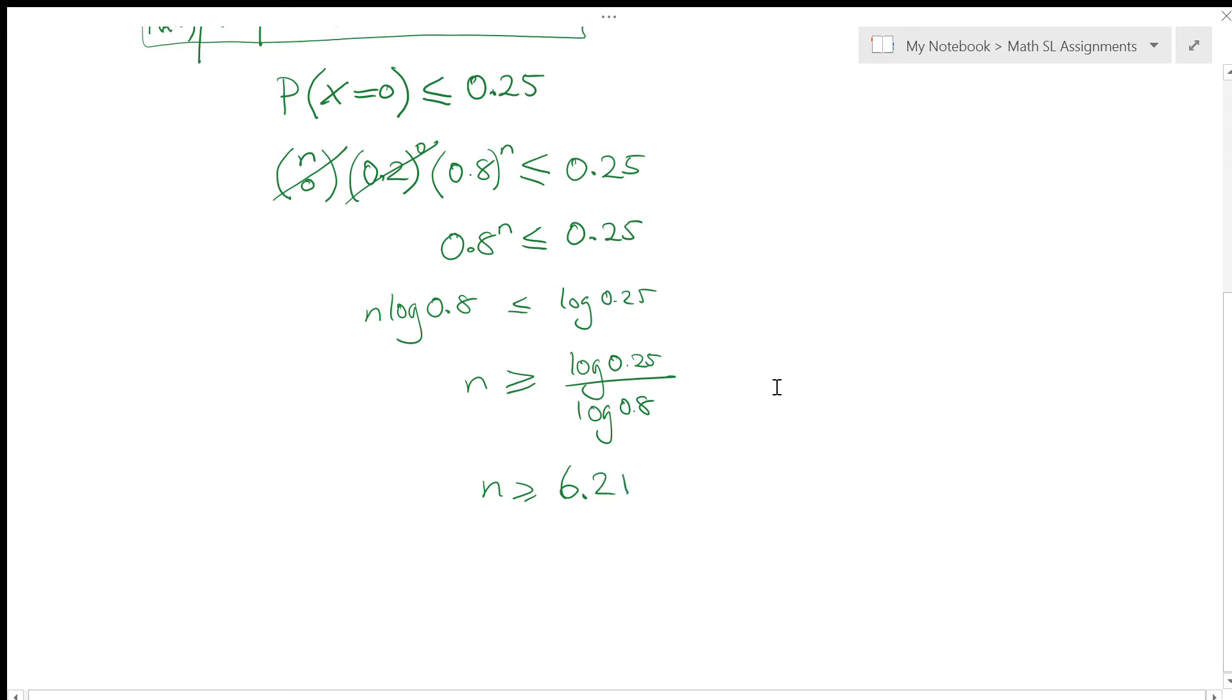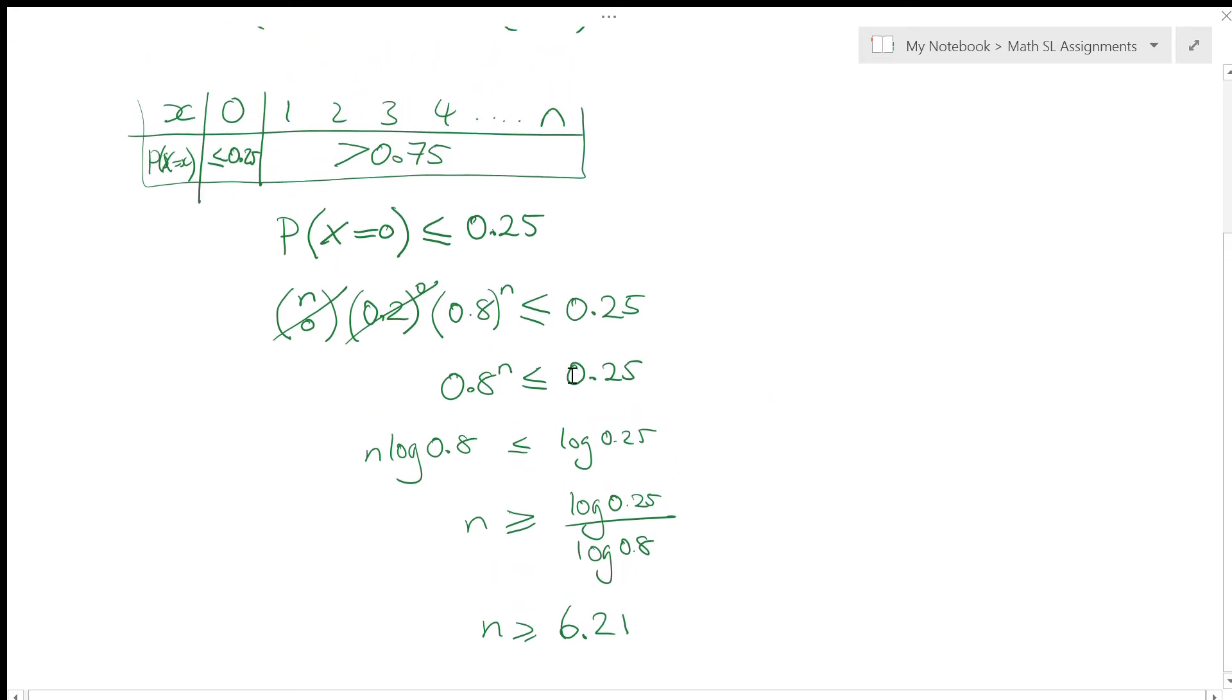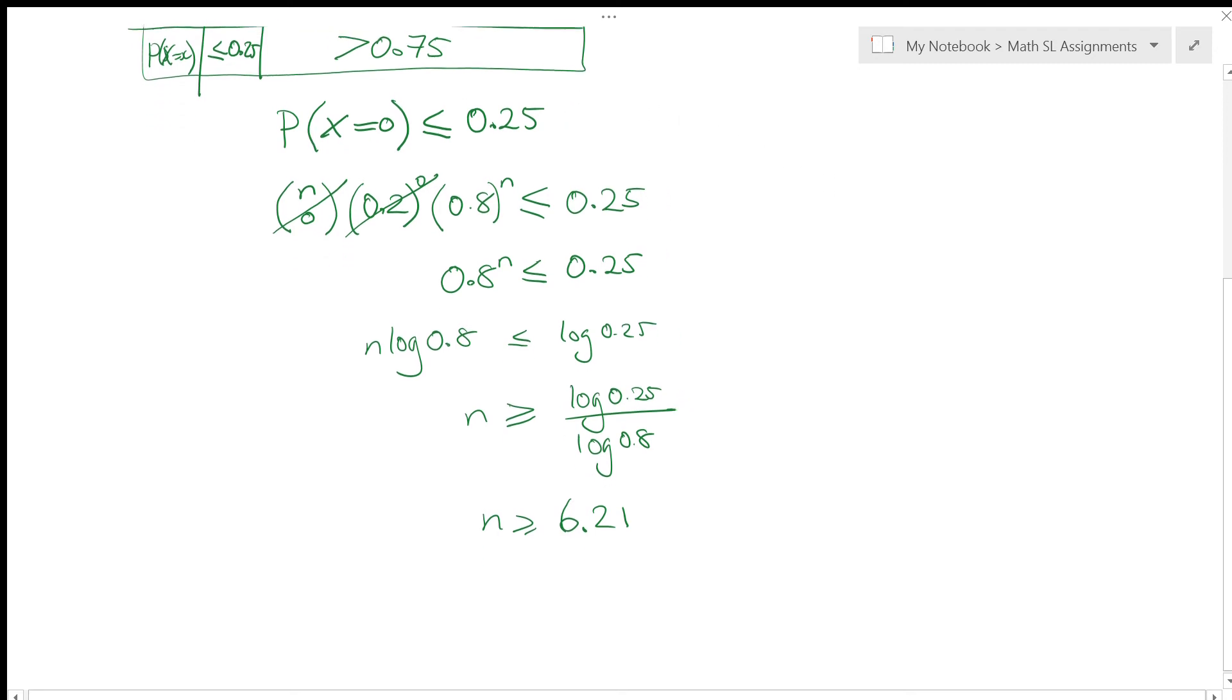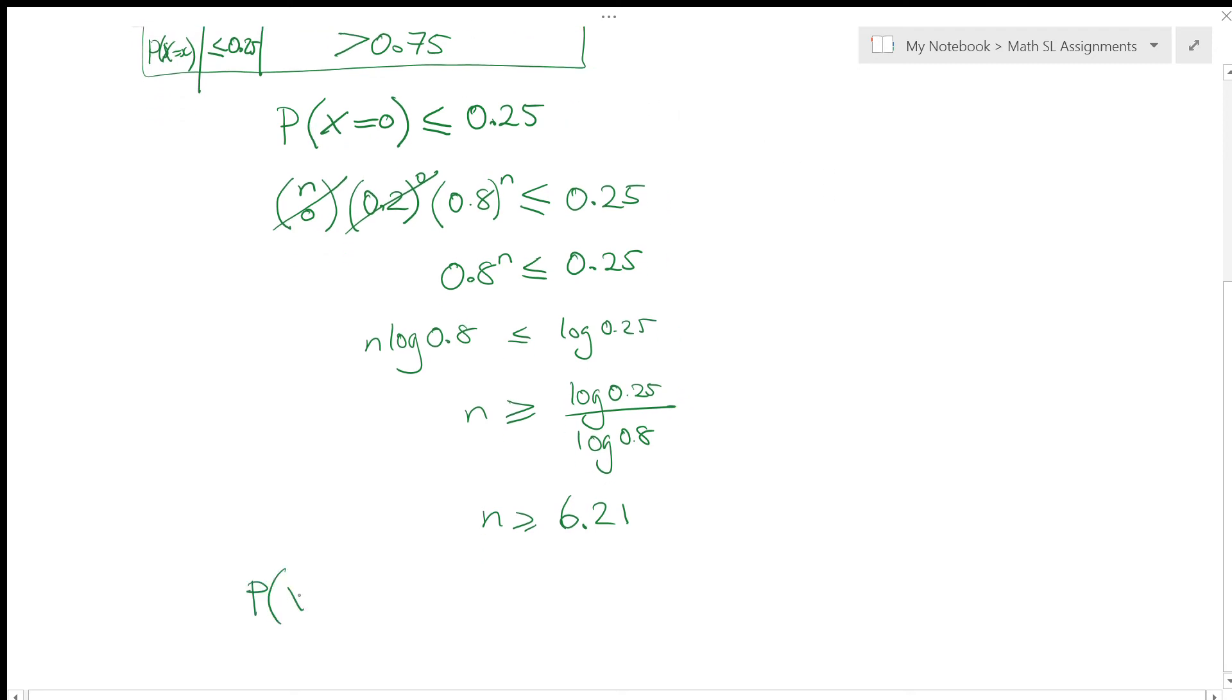Alright, so let's go back to what we were trying to work out. I'm saying the probability, I want the probability of x equal to 0 needs to be less than or equal to 0.25. That's going to happen as long as n is greater than or equal to 6.21. So if I repeat it 6 times, if n is equal to 6, that's not big enough.